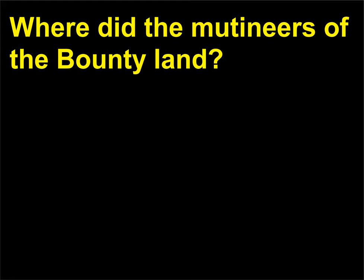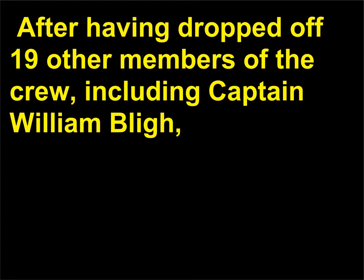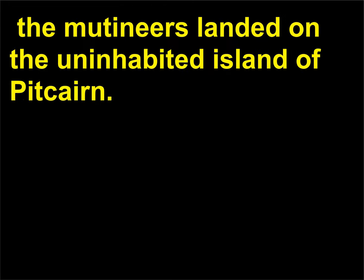Where did the mutineers of the Bounty land? In 1789, members of the crew of the HMS Bounty mutinied. After having dropped off 19 other members of the crew, including Captain William Bligh, the mutineers landed on the uninhabited island of Pitcairn.